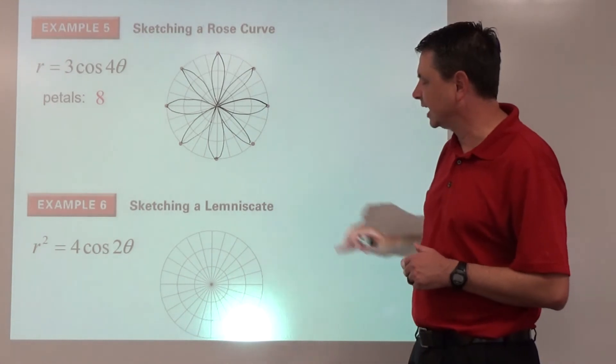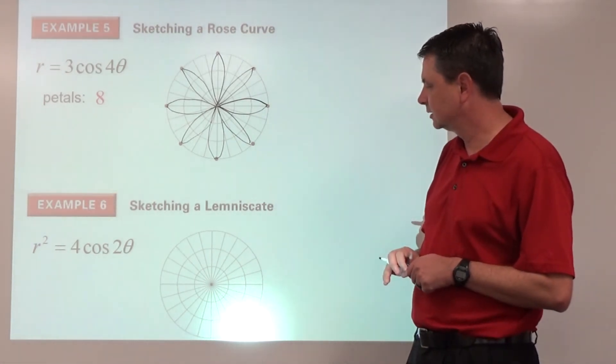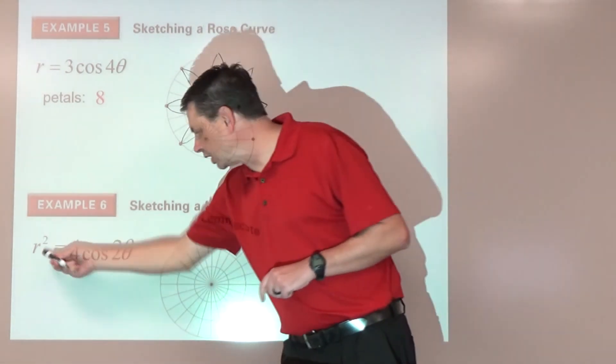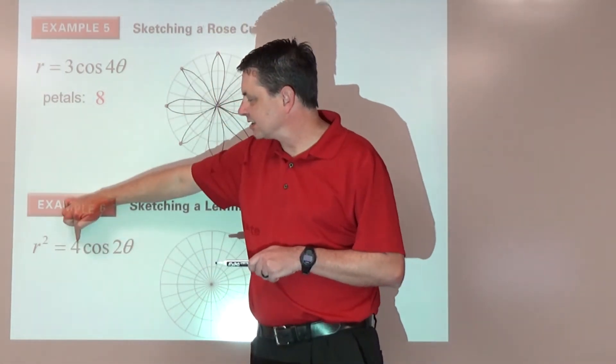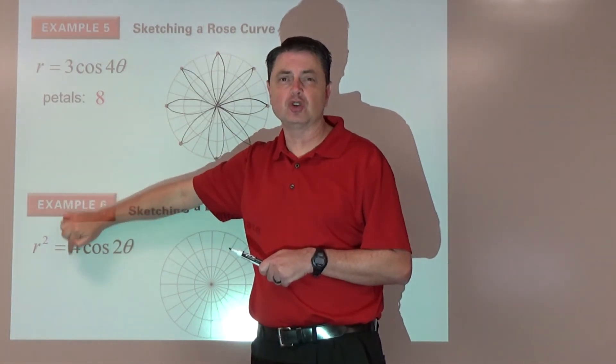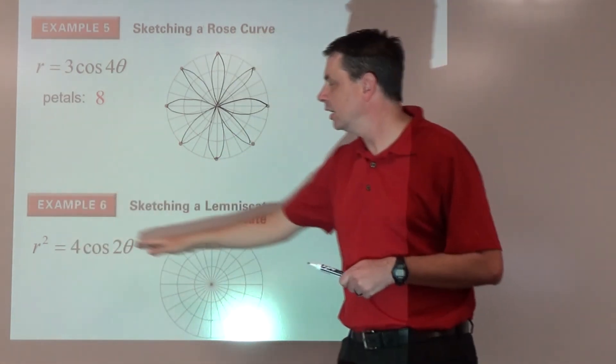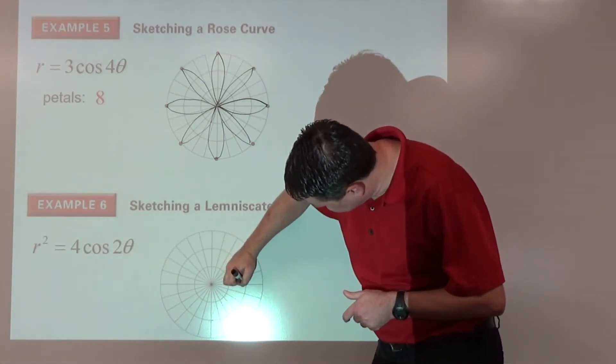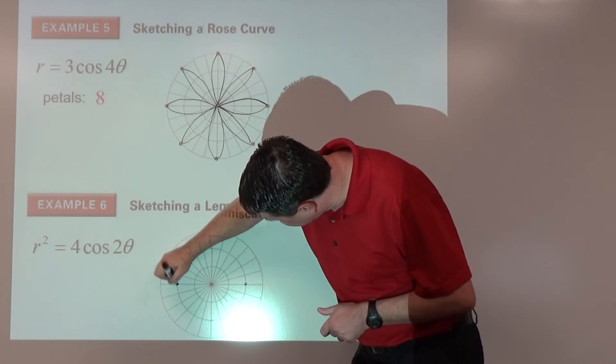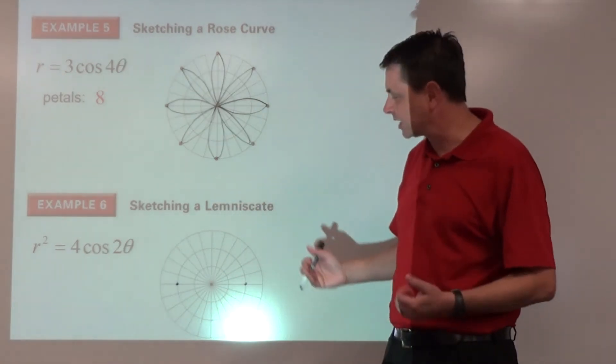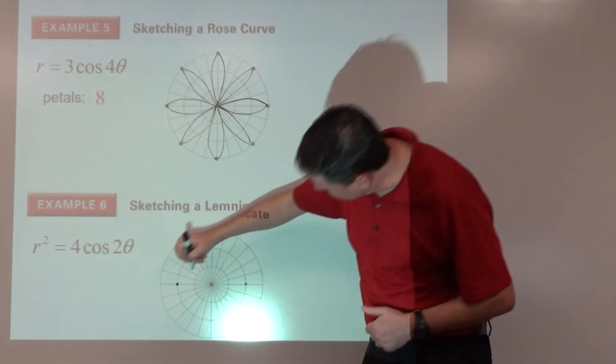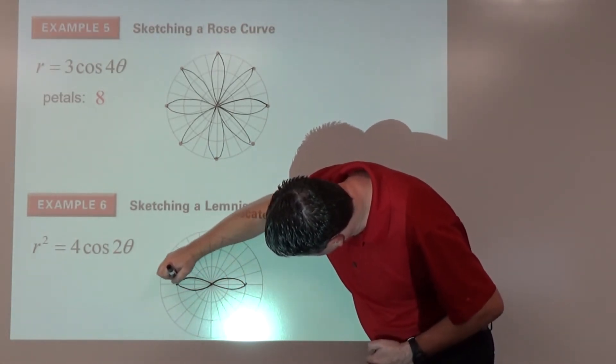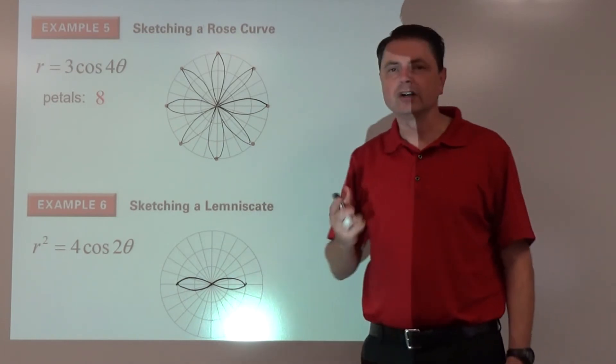Example 6: sketching a lemniscate. Remember, lemniscate is a figure eight. It's that r-squared equation. This is a squared, so a would be 2, 2 away from the origin. Cosine, the easy one on the x-axis, so 2 away and 2 away. Also notice the 2 theta, which is our form for a lemniscate. Now we just have a figure eight. There's our lemniscate.